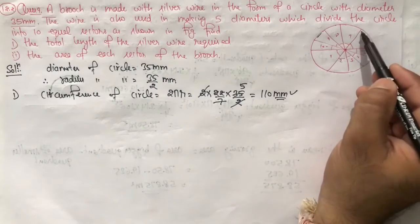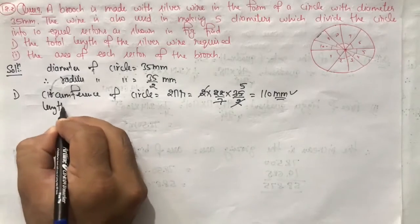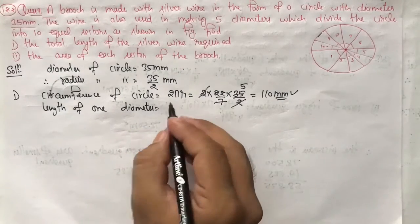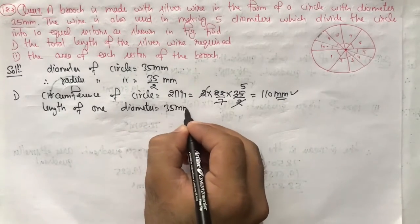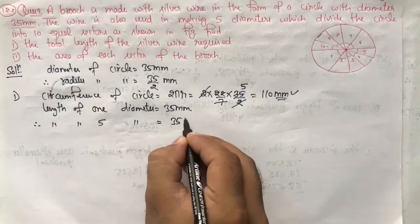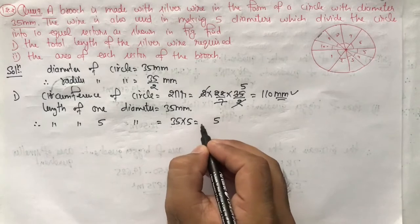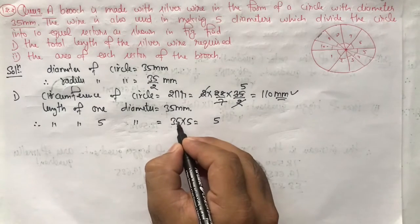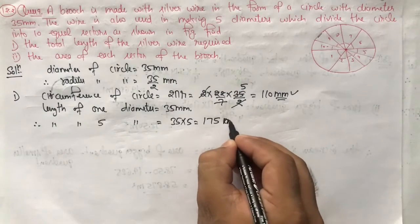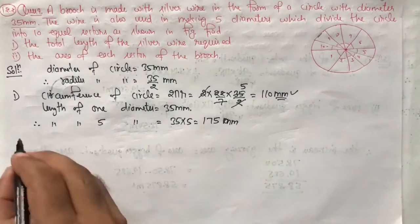Now the five diameters. The length of one diameter is equal to 35 mm. Therefore, length of five diameters will be equal to 35 × 5. That will be 5 × 5 = 25, 5 × 3 = 15 plus 2 = 17, so 175 mm. Five diameters total length is 175 mm.